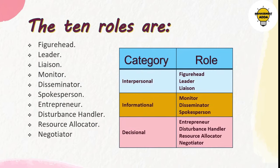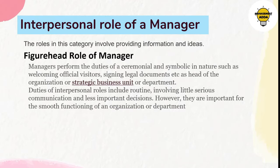There are generally 10 roles, characterized in three parts. First, interpersonal, which carries roles like figurehead, leader, and liaison. Second, informational, which carries roles like monitor, disseminator, and spokesperson. Third, decisional, which carries roles like entrepreneur, disturbance handler, resource allocator, and negotiator. Now let us see all these roles in detail.